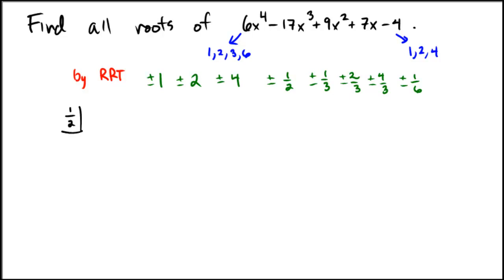So 1 half is a solution. 6, negative 17, 9, 7, negative 4. This also verifies how I check to see if something's a root. 6, 3, negative 14, negative 7, 2. I'm doing synthetic division here, of course. That's 4 and 0. So that means that the 1 half worked.